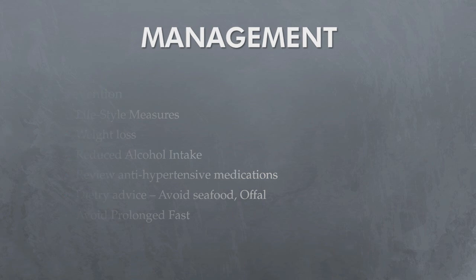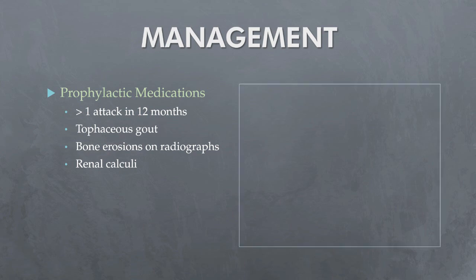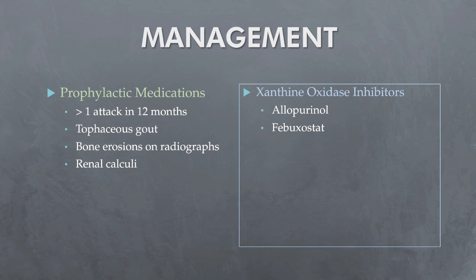Prophylaxis medications are indicated if there is more than one attack per year, tophaceous gout, bone erosions on radiographs, or renal calcular disease. The aim is to reduce attacks and prevent damage caused by crystal deposition. Use the xanthine oxidase inhibitor allopurinol, titrated from 100 mg per 24 hours, increasing every 4 weeks until plasma urate is less than 5 mg per deciliter. Maximum recommended dose is 300 mg 8-hourly. Allopurinol may trigger an attack, so wait 3 weeks after an acute episode and cover with regular NSAIDs and colchicine. If the patient is already established on allopurinol, there is no need to stop it during acute attacks. Annual monitoring of uric acid levels is recommended, and in most patients uric acid-lowering therapy needs to be continued indefinitely.